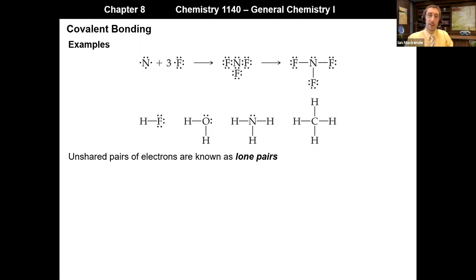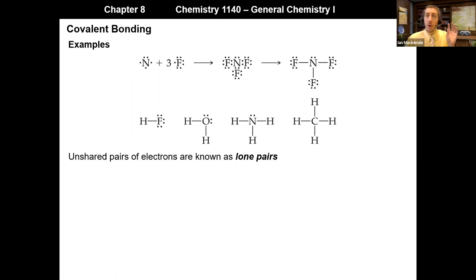Unshared electrons that exist in pairs — the three pairs on fluorine, the two on oxygen, or the one on nitrogen — are referred to as lone pairs, simply because they are not shared between two atoms but located on one lone atom. So when you hear the terms bonds and lone pairs, this gives you a clearer picture of what's happening in a Lewis structure.